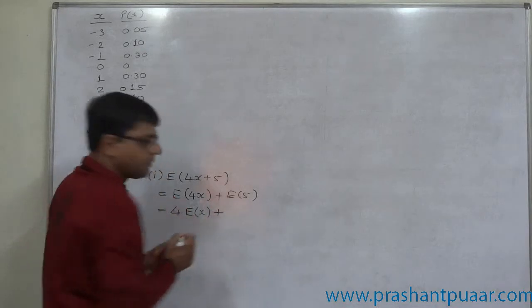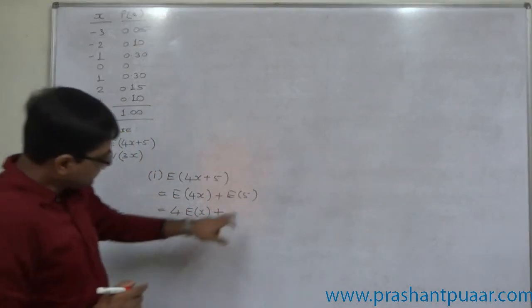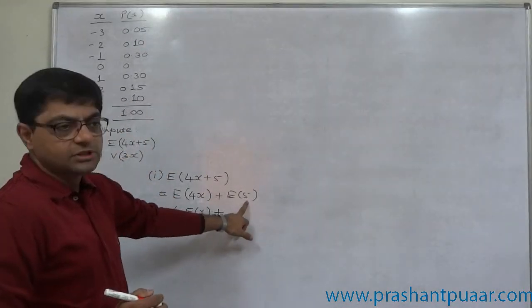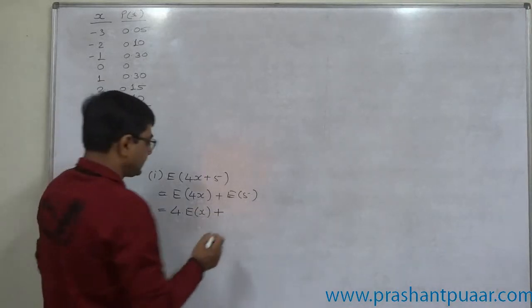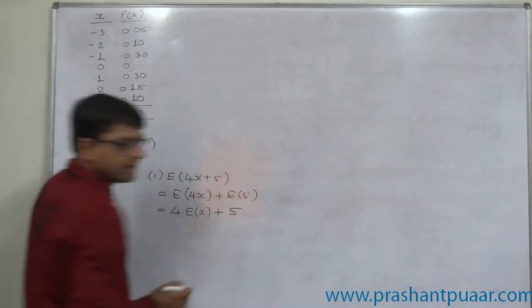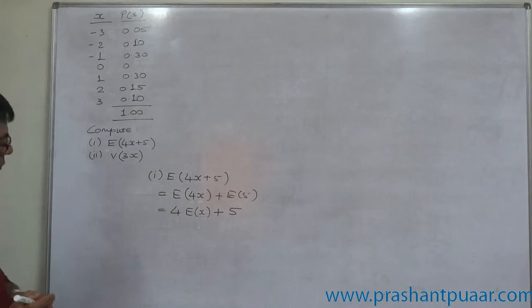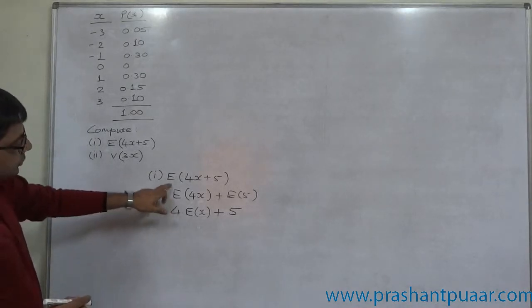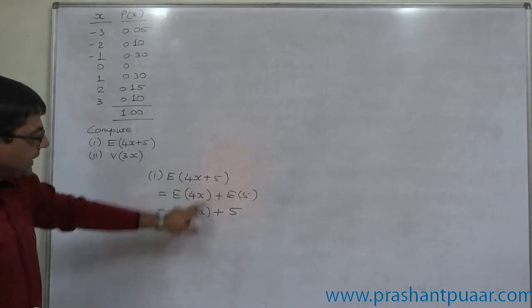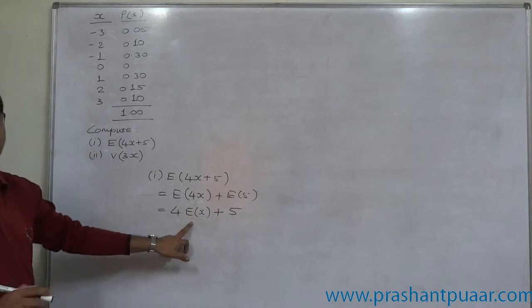And the second property of the expected value is, expected value of any constant number is the constant number itself. That means expected value of 5 is nothing but 5. So to get the answer of this problem, E of 4x plus 5, we have to calculate E of x.